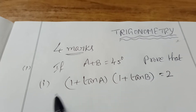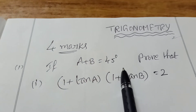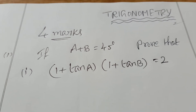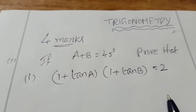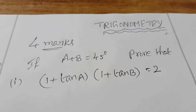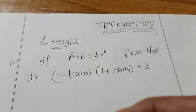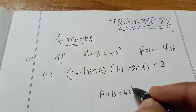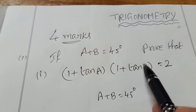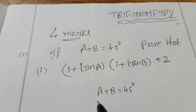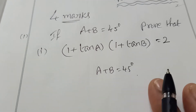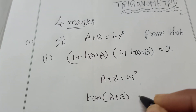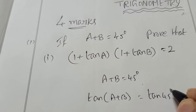Today we are discussing four-mark questions. First question: if A plus B equals 45 degrees, prove that (1 + tan A) into (1 + tan B) equals 2. To solve this, take A plus B equal to 45 degrees, then apply tan function on both sides — tan of A plus B equals tan of 45 degrees.